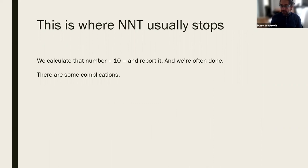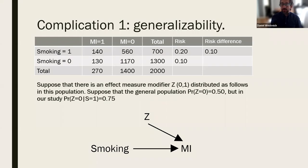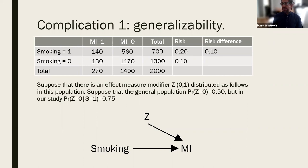There are some complications. By way of motivating the rest of this talk, I want to discuss a couple. The first complication is the complication of generalizability. Here's our data, and now suppose there is some effect measure modifier Z — a dichotomous variable. It's not a confounder, as demonstrated in the DAG, but it does affect the risk of the outcome, which means on some scale it's going to be an effect measure modifier for this non-null association between smoking and heart attack. MI stands for myocardial infarction — heart attack.